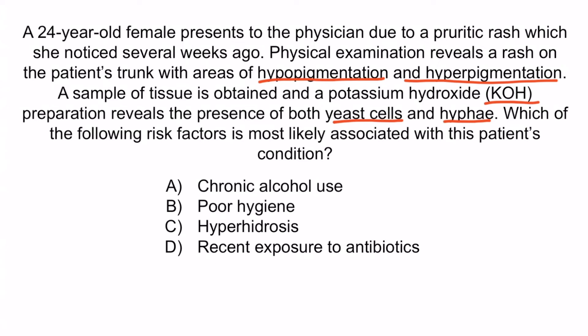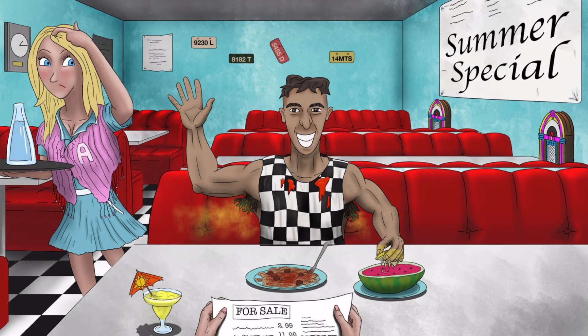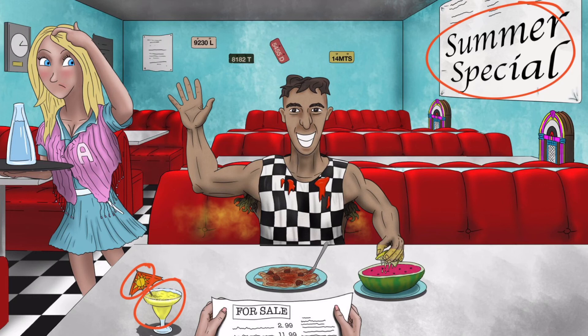With this in mind, the correct answer is C, hyperhidrosis. From the image, recall that the summer special sign on the wall, the margarita, and a sun on the cocktail umbrella are all references to the summer, and are here to help you remember that this infection is more common in the summer when the weather is hot and humid.